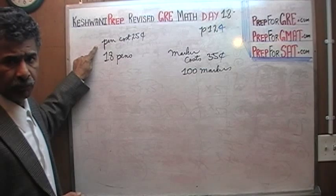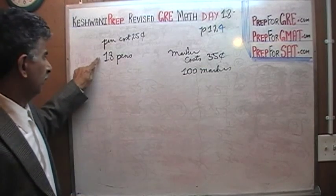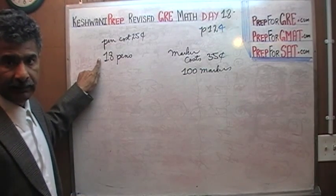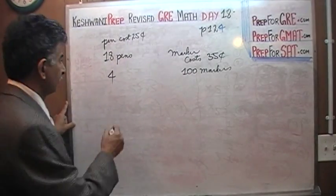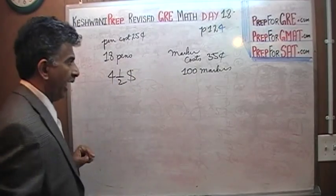Each pen costs 25 cents, that's a quarter. We are buying 18 of them, 18 quarters. I know 16 quarters make $4, and two more quarters make $0.50, so that's $4.50.